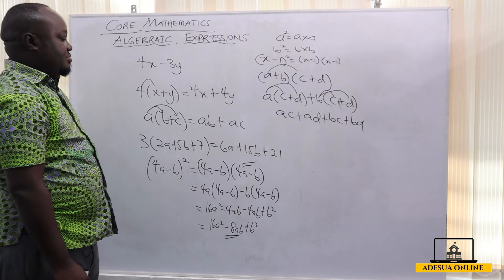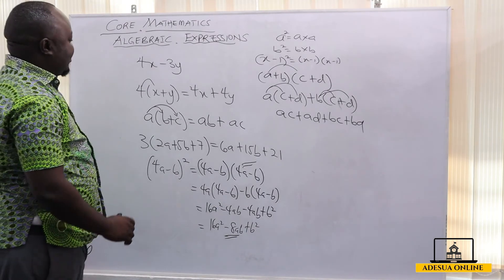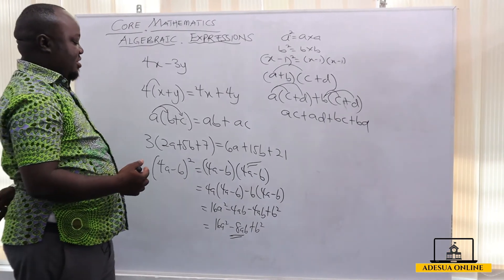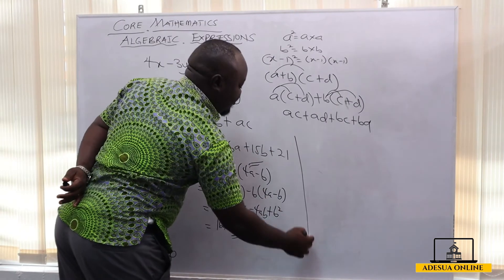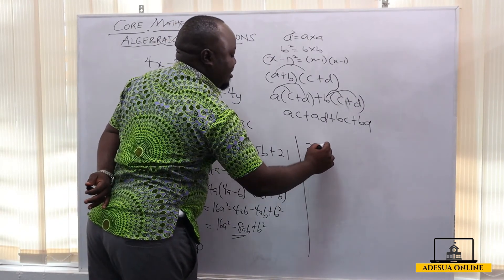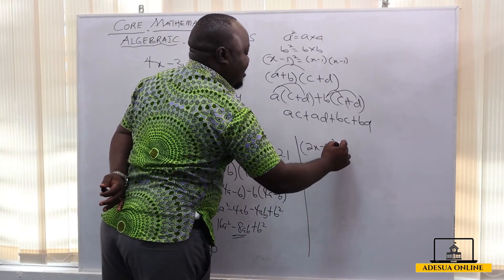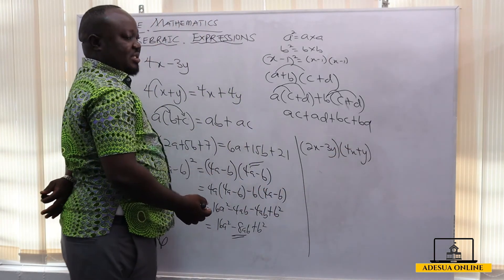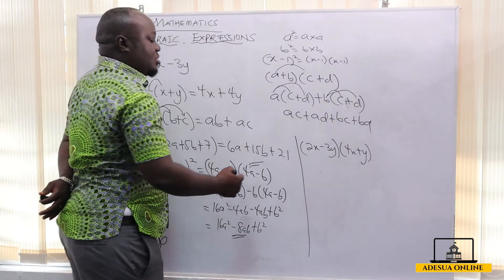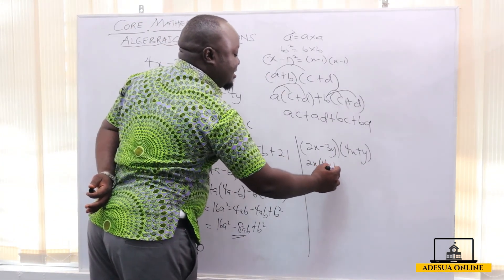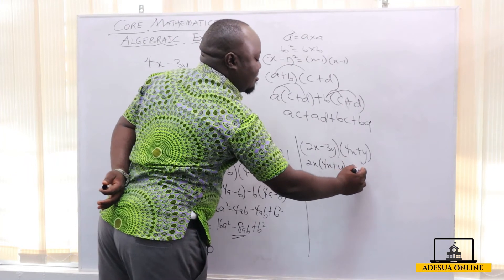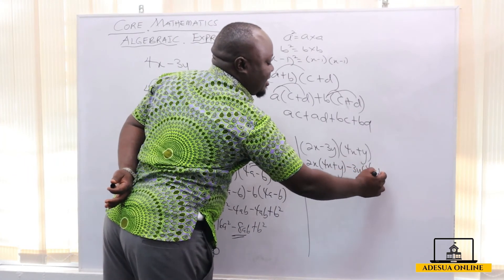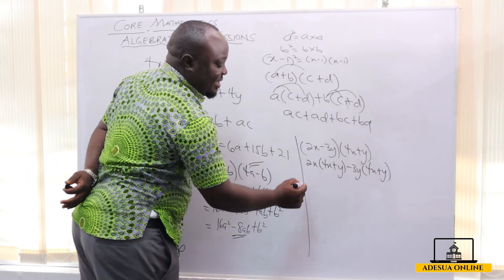There are different types of expansions you can be given. You can also be given 2x minus 3y and then 4x plus y and be asked to expand this. It's the same principle: you have 2x into 4x plus y, and then minus 3y also multiplying 4x plus y.